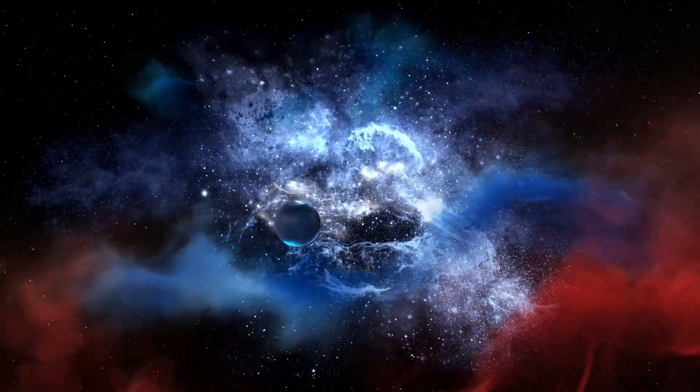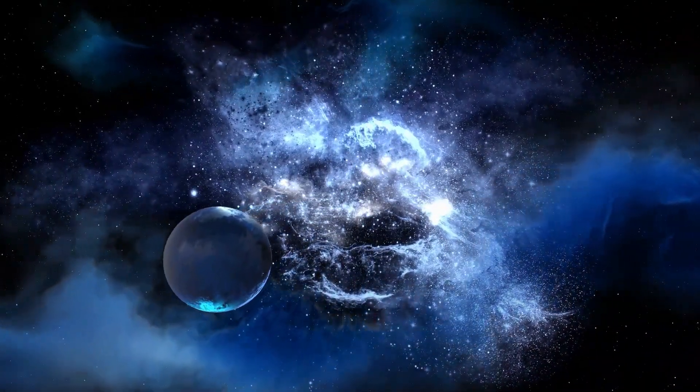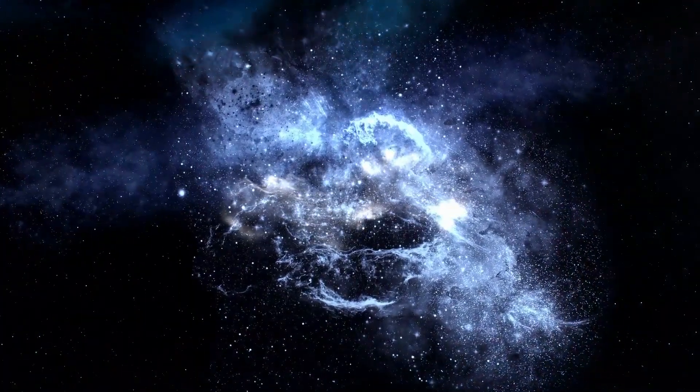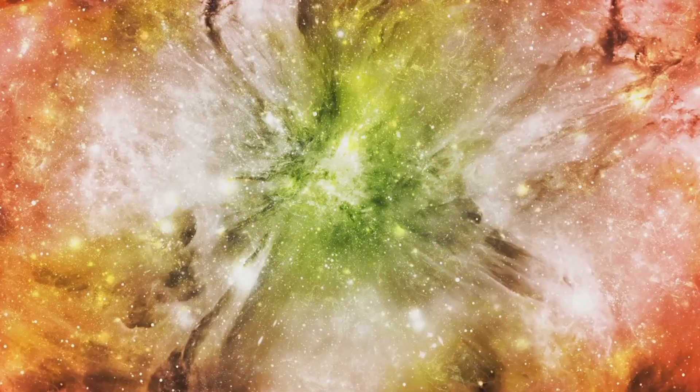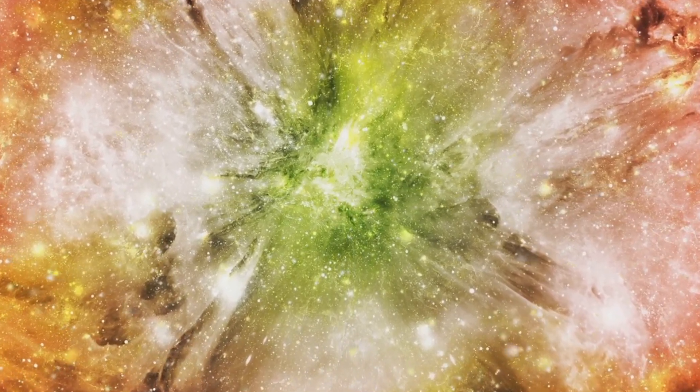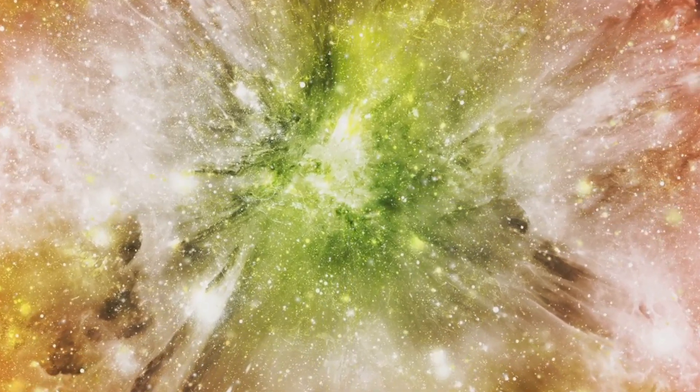Reflection nebulae, on the other hand, are visible due to the light they reflect from nearby stars. Dark nebulae are dense clouds of gas and dust that obstruct the light from whatever is behind. Planetary nebulae, despite their name, have nothing to do with planets. They are shells of gas and dust ejected from stars late in their lives.